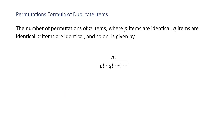Permutations formula for duplicate items: the number of permutations of N items where P items are identical, Q items are identical, R items are identical, and so on, is given by N! divided by (P! × Q! × R! × ...).